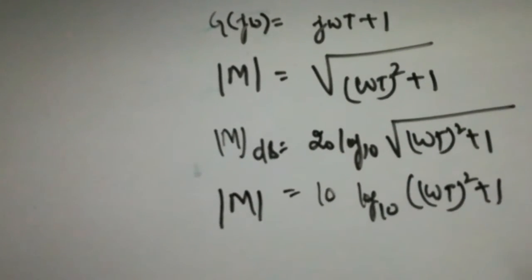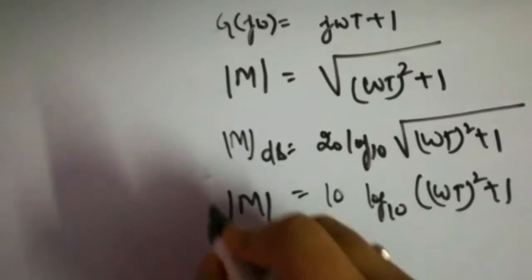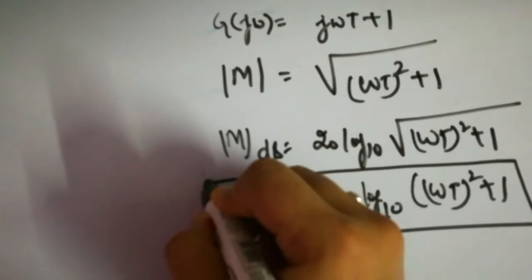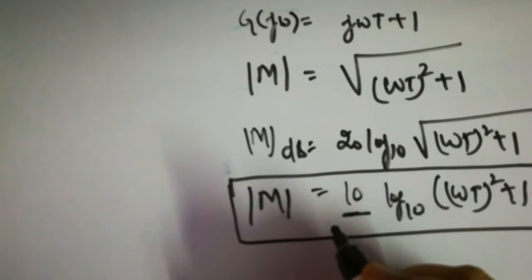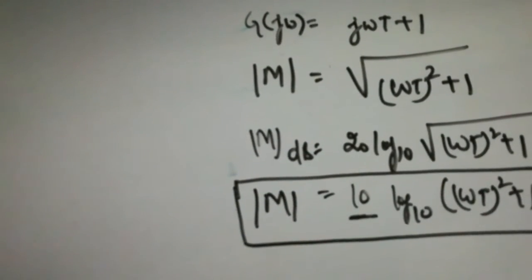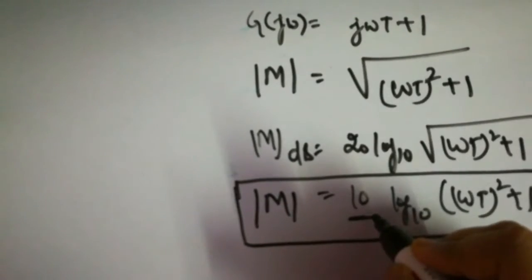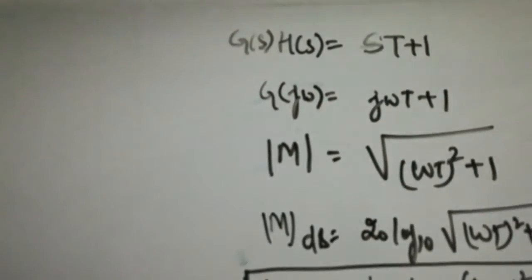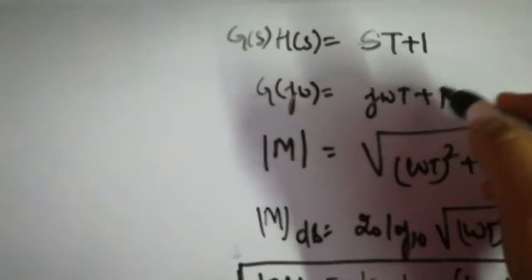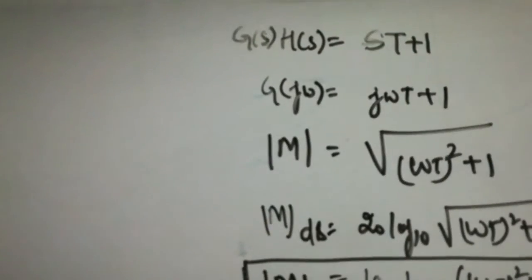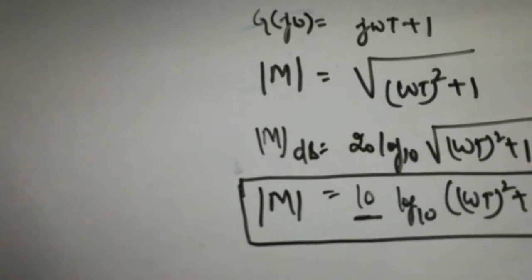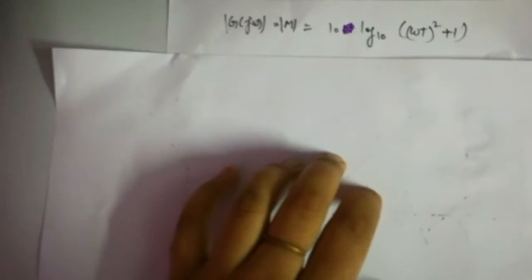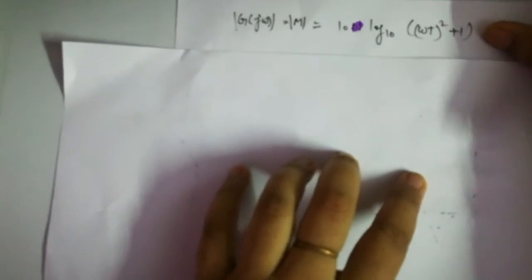What we had before was 1/(sT + 1), and the difference here is simply a minus sign. The procedure is the same as we have done before; the only difference is that the slope will be positive. For 1/(jωT + 1) we had a decreasing slope, but here we have an increasing slope because there is no minus sign. So there are two cases for this transfer function.